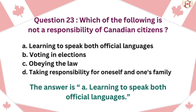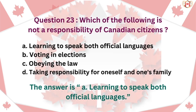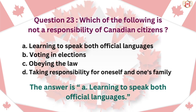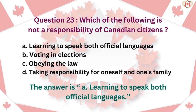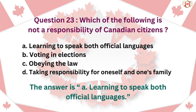Question 23: Which of the following is not a responsibility of Canadian citizens? A. Learning to speak both official languages, B. Voting in elections, C. Obeying the law, D. Taking responsibility for oneself and one's family. The answer is A. Learning to speak both official languages.